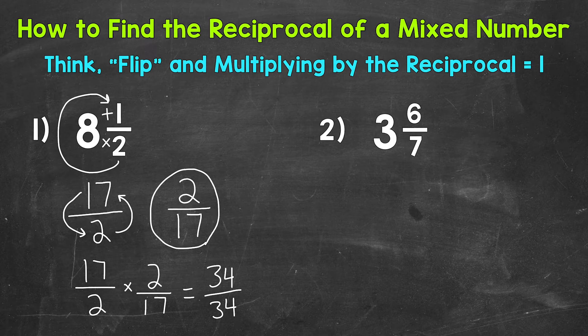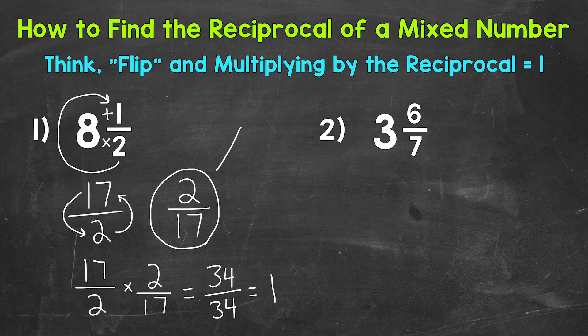And 2 times 17 is 34. So the same numerator over the same denominator equals 1 whole, which is just 1. And we see that the original improper fraction of 17 over 2 times its reciprocal of 2 over 17 equals 1. So the reciprocal of 8 and 1/2 is 2 over 17 — 2 seventeenths.